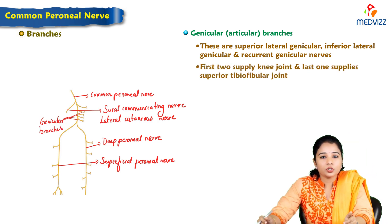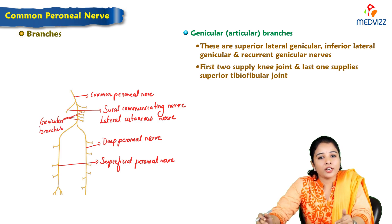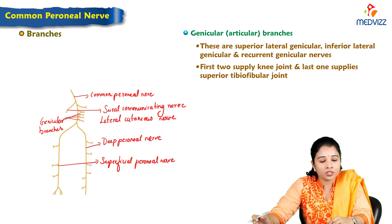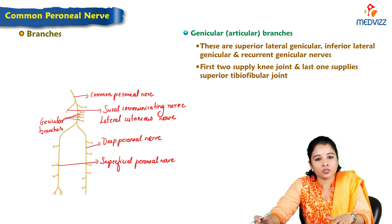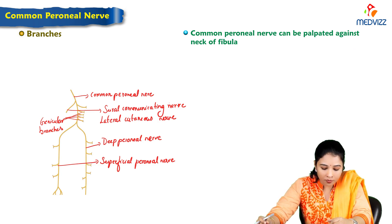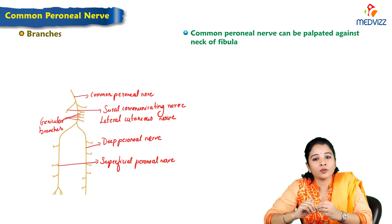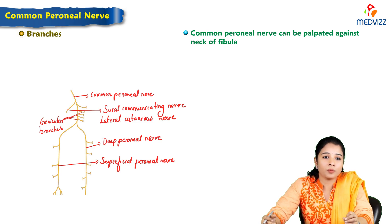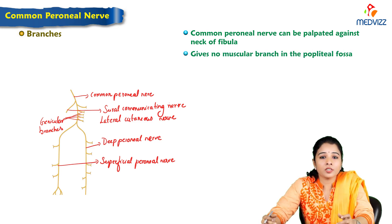The superior lateral genicular and inferior lateral genicular branches supply the knee joint. The recurrent lateral genicular branch supplies the superior tibiofibular joint. Genicular means they supply the joints. The common peroneal nerve can be palpated against the neck of the fibula, as it winds around that site. Common peroneal nerve gives no muscular branches in the popliteal fossa.